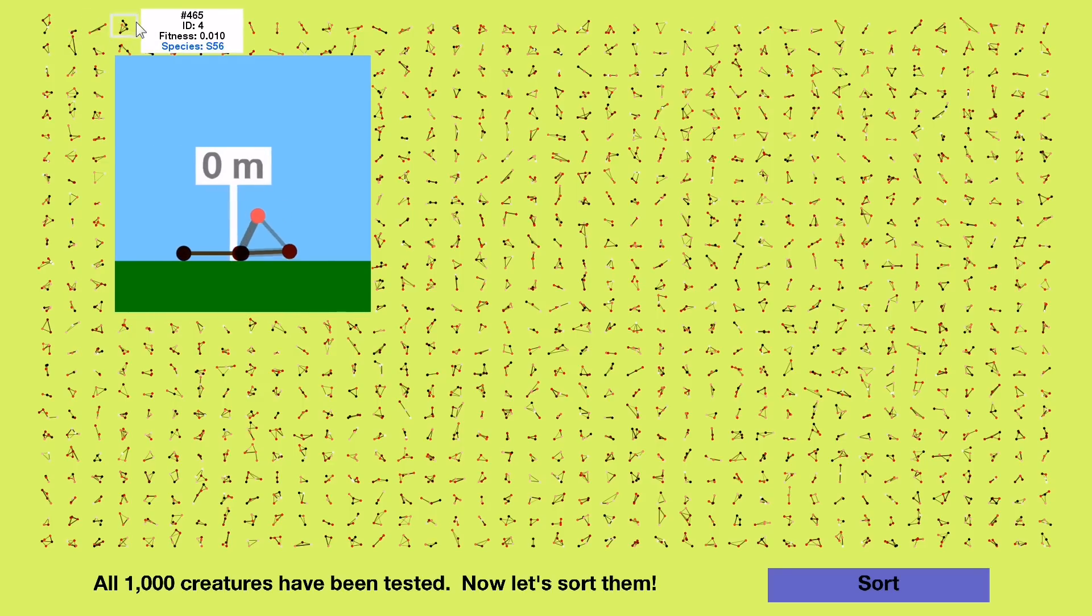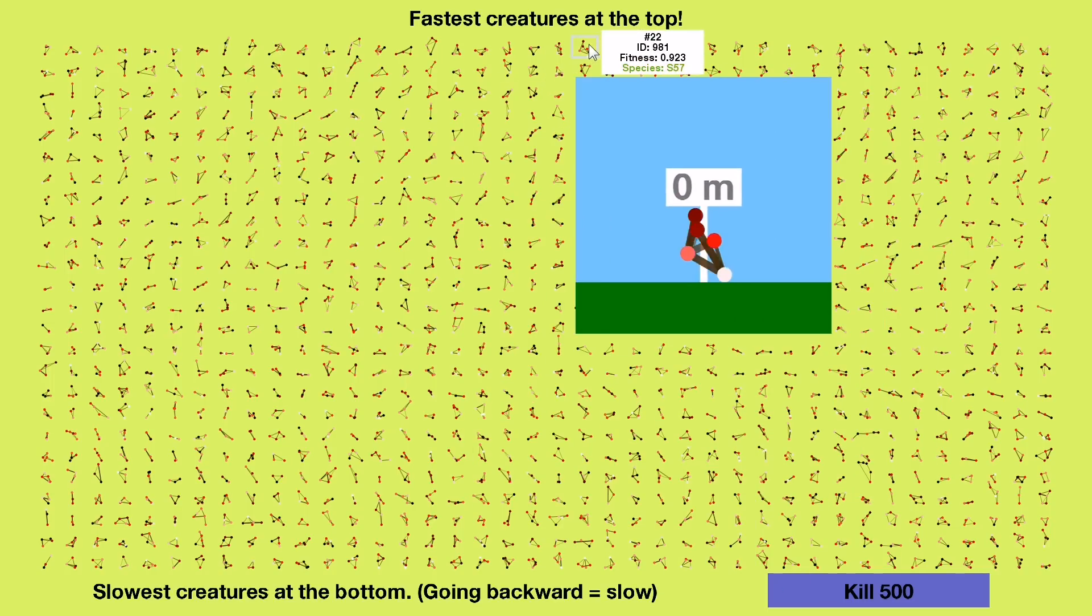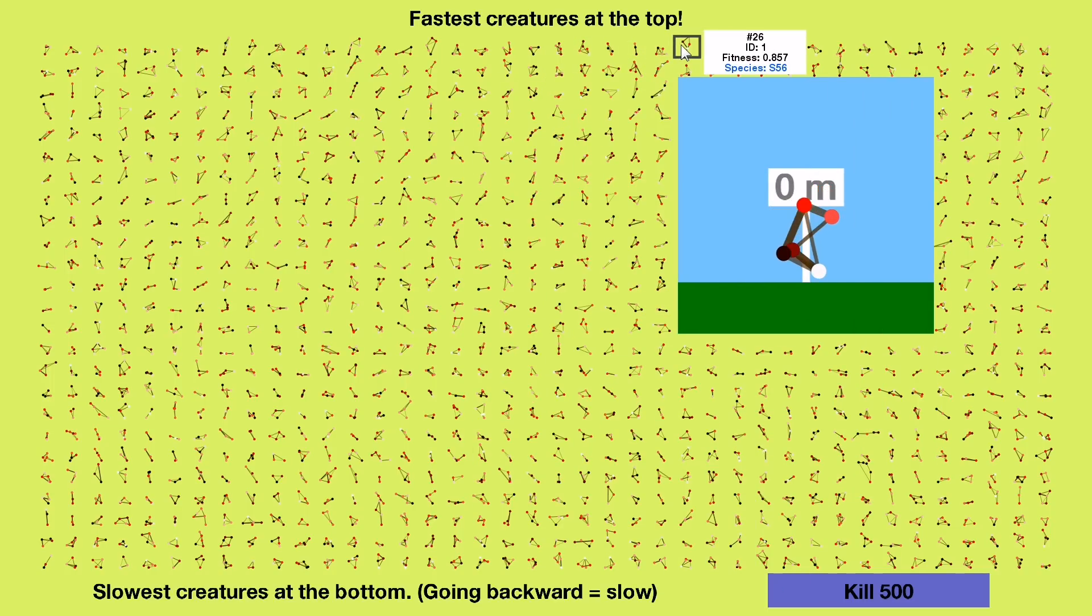Well, anyway, let's sort them all, from fastest to slowest. Going backward is considered very slow. Here's our first creature. Despite all of its stumblings, it still managed to rank 26th out of 1,000,